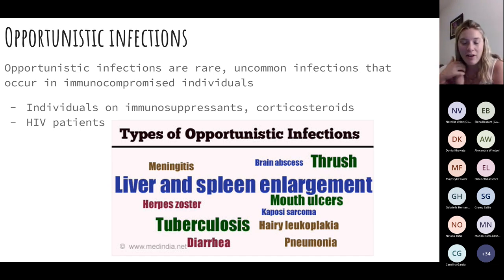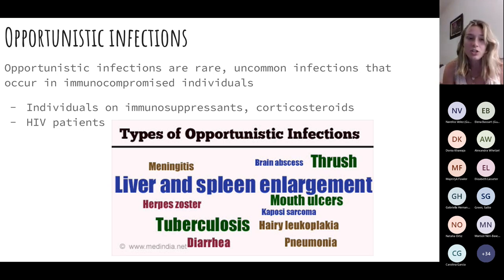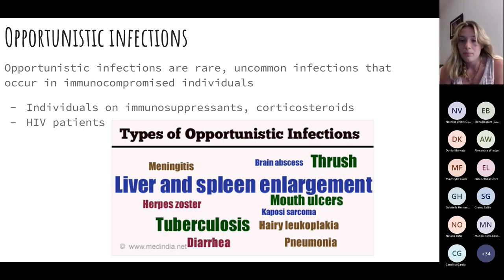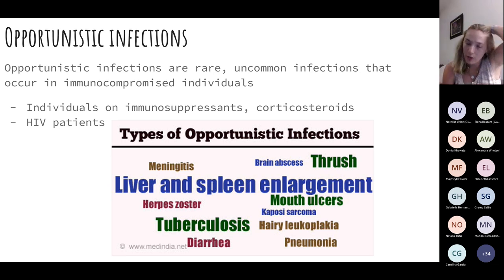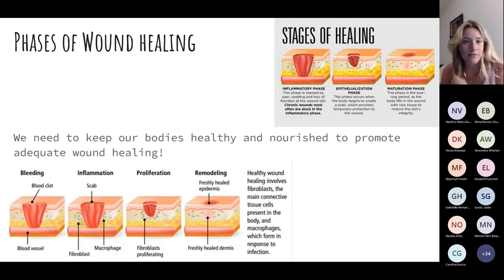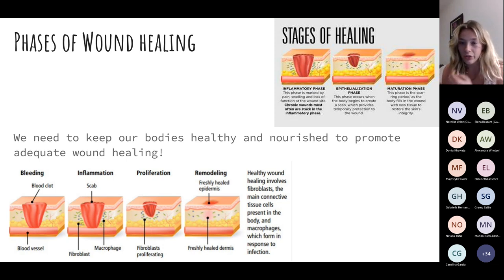Opportunistic infections are very rare infections that usually patients don't present with often. If you ever have a patient come up with an opportunistic infection, it's usually caused by immunocompromisation. If my patient is on immunosuppressants, corticosteroids, or is a cancer patient — any patient with altered immunity is at risk for opportunistic infections, especially our HIV patients. In order to properly heal wounds, we have to have good nutrition, good hydration, and a healthy diet so that our bodies can heal and take care of themselves.